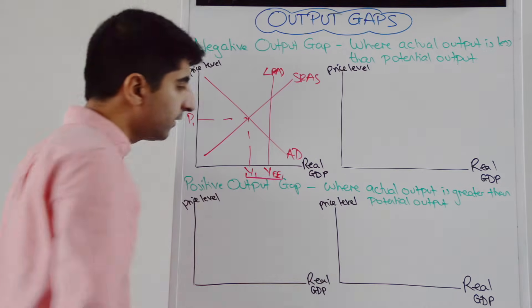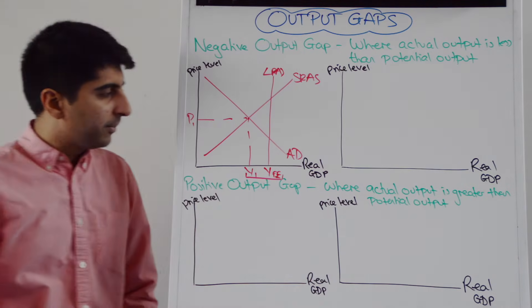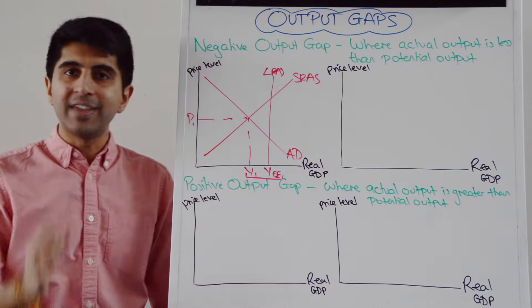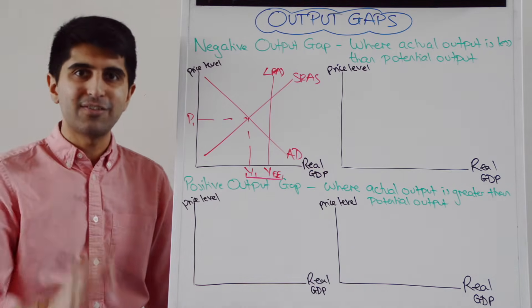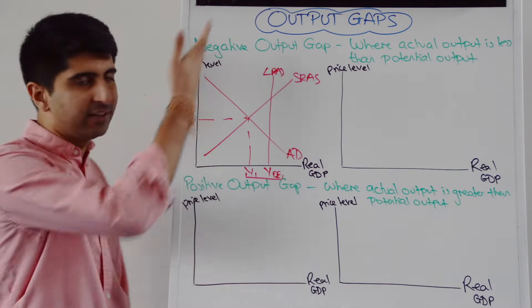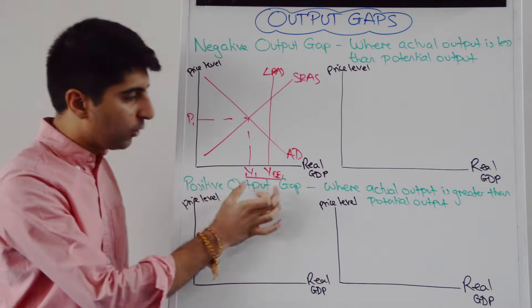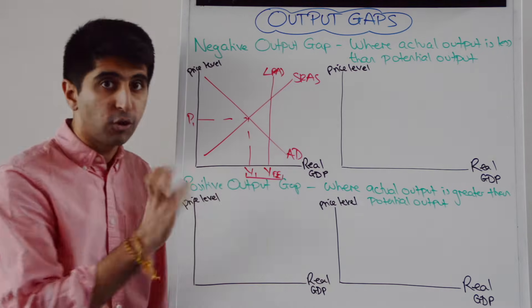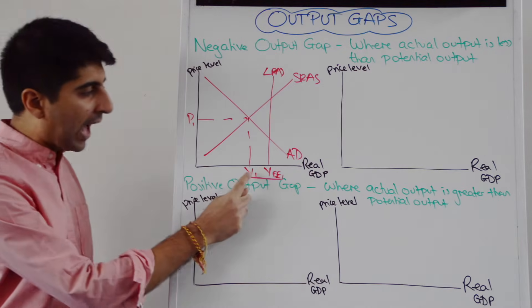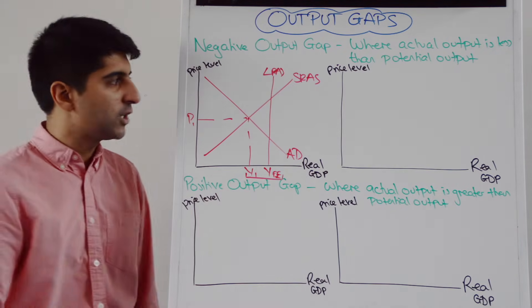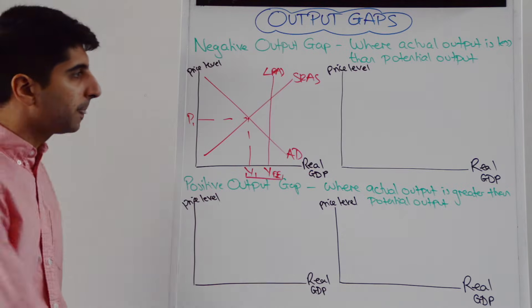The difference between Y1 and YFE is the negative output gap, or the deflationary gap, or the recessionary gap — whatever you want to call it. There it is right there. Actual level of output is less than the potential level of output.